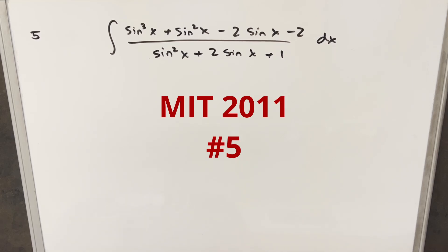Okay, we have here another integral from the MIT Integration Bee 2011. This one was problem number 5. We have the integral of sine cubed x plus sine squared x minus 2 sine x minus 2, all over sine squared x plus 2 sine x plus 1, dx.